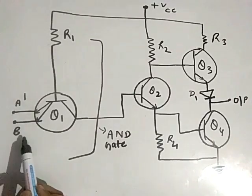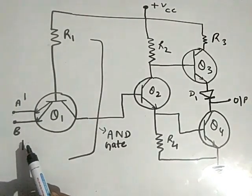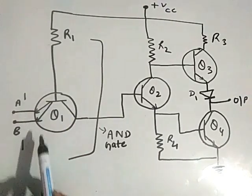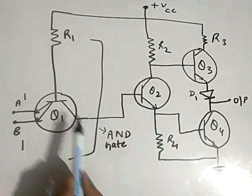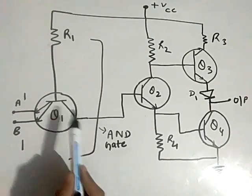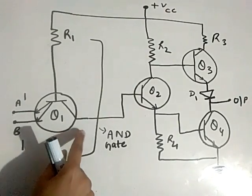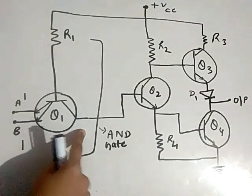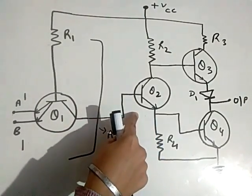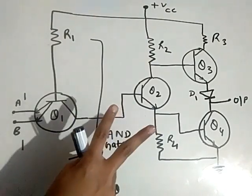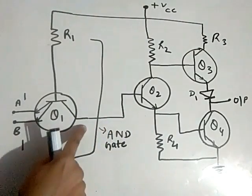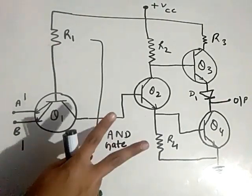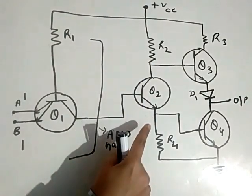When we give input high to A and B — input 1,1 — then our Q1 transistor does not conduct. But it has a diode on the collector side. That diode gets forward biased, and because of that, Q2 is in conduction mode. One reason is the collector-side diode is forward biased; the other is that the VCC supply is coming, so Q2 starts to conduct.